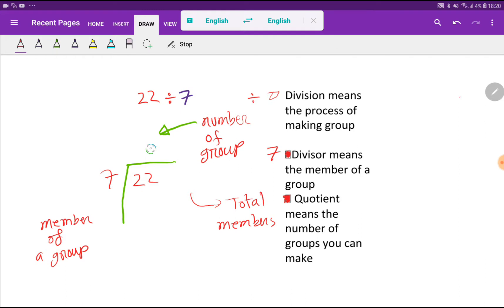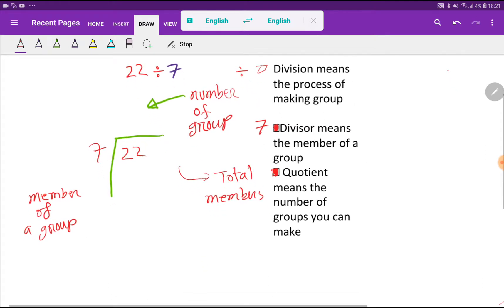And here we write quotient. Quotient means number of groups. That is, how many groups you can form taking 7 at one time. So look at here: quotient means number, but divisor means member. So let's say that you have 22 friends.